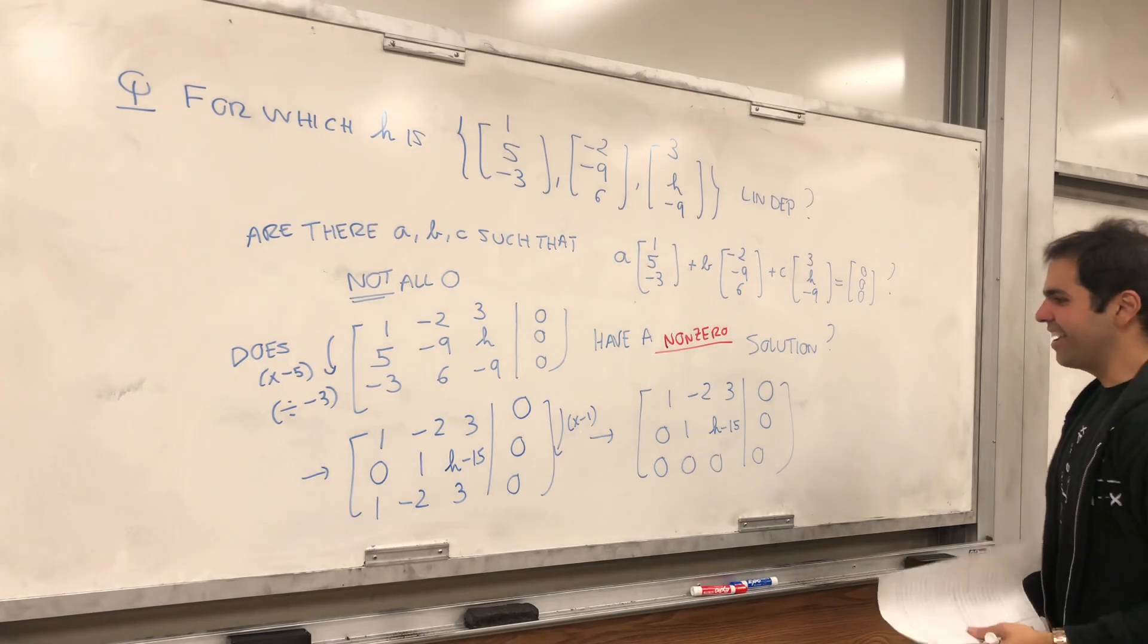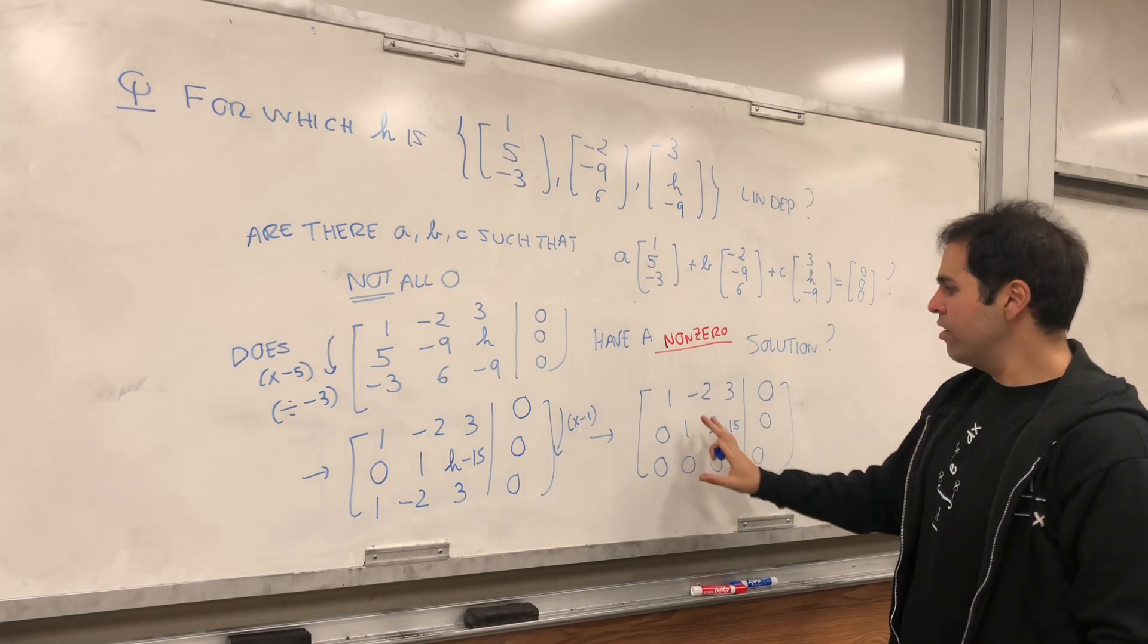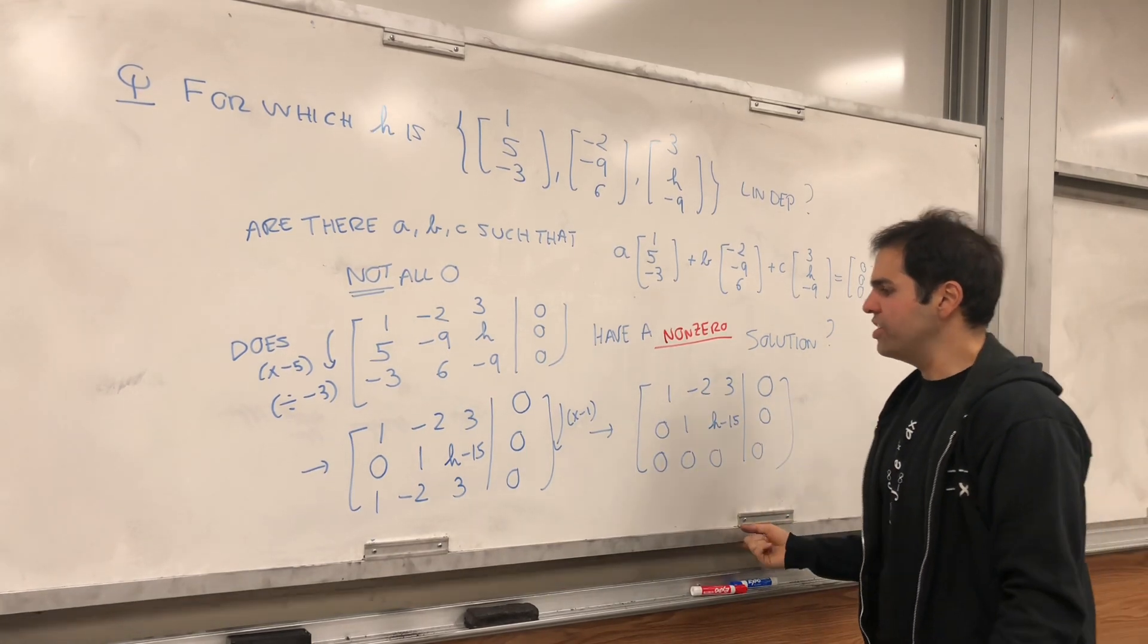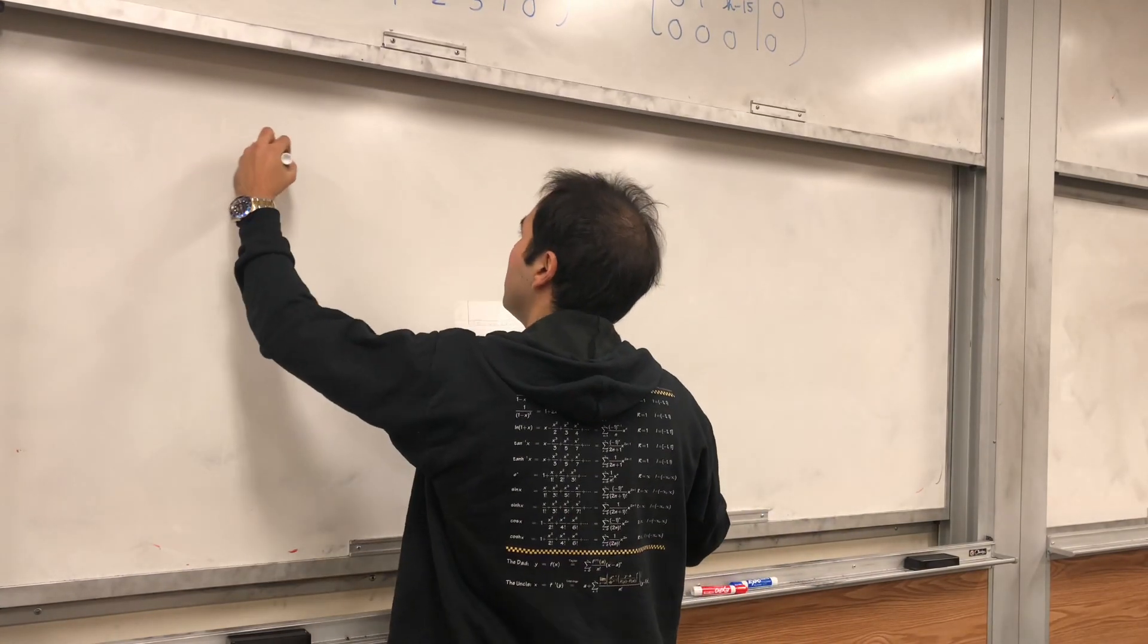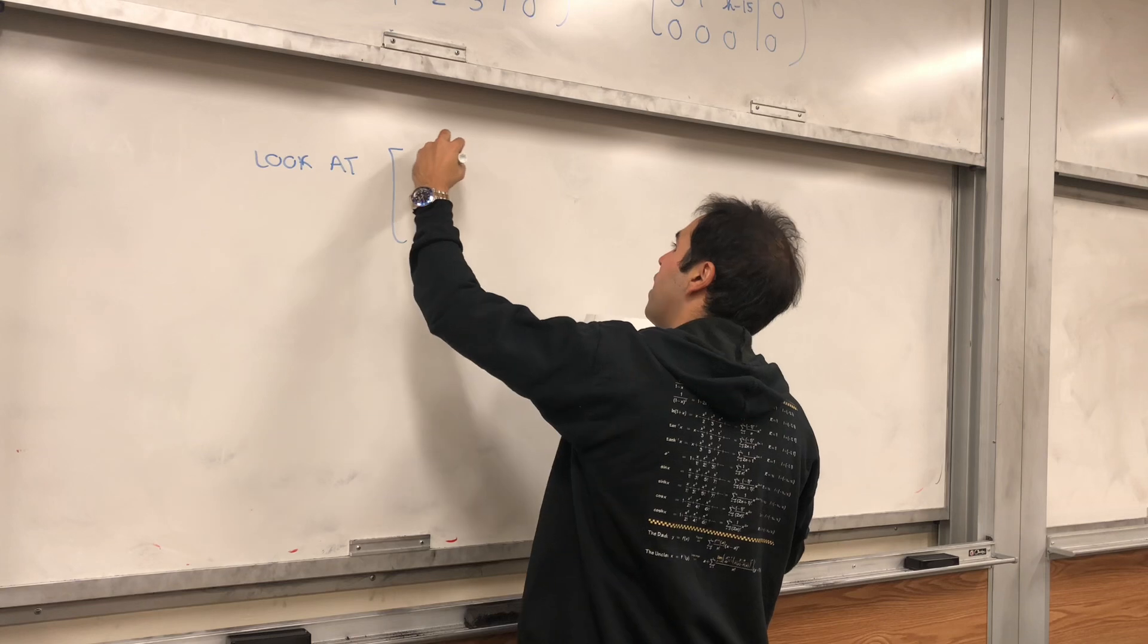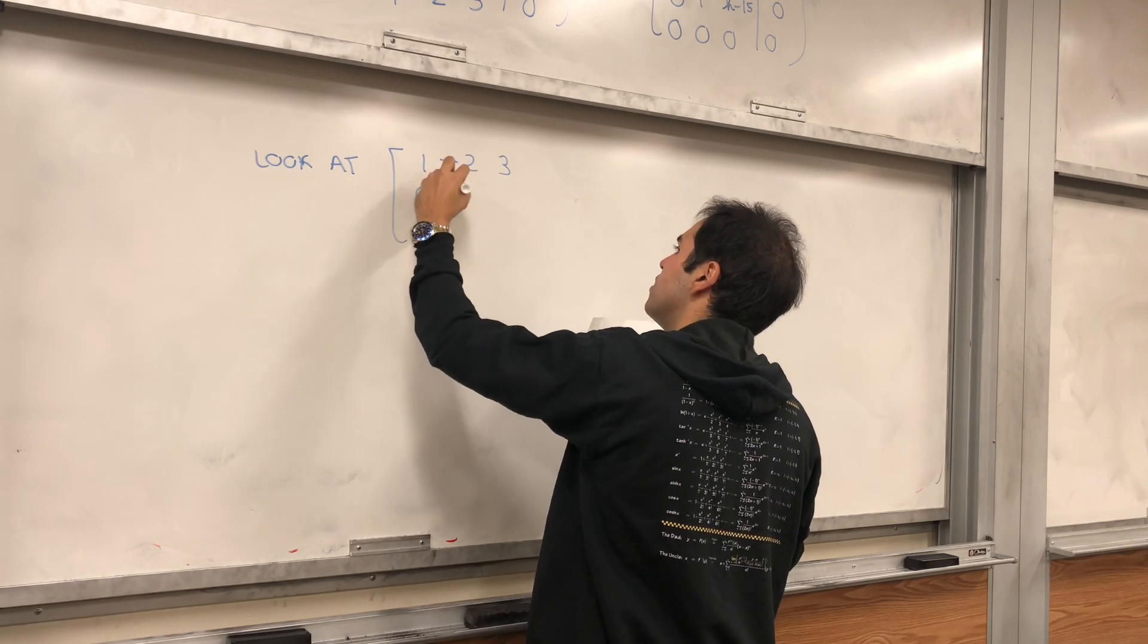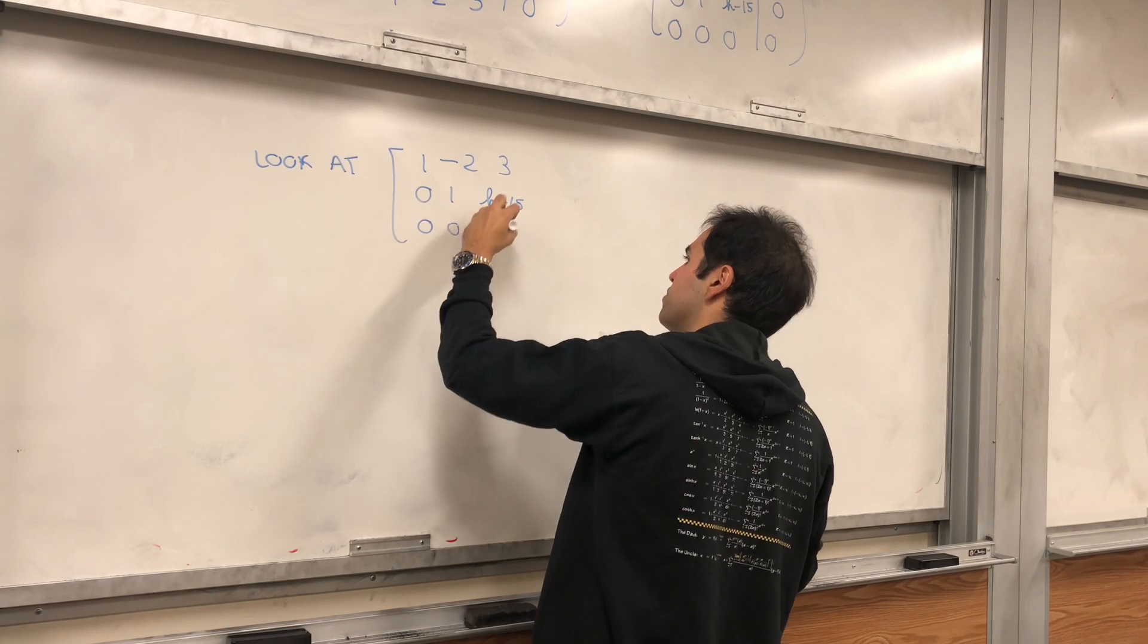Now it turns out I realized we didn't even have to put the 0, 0, 0. Let's just work with this coefficient matrix. Just look at 1, minus 2, 3; 0, 1, h minus 15; and then 0, 0, 0.